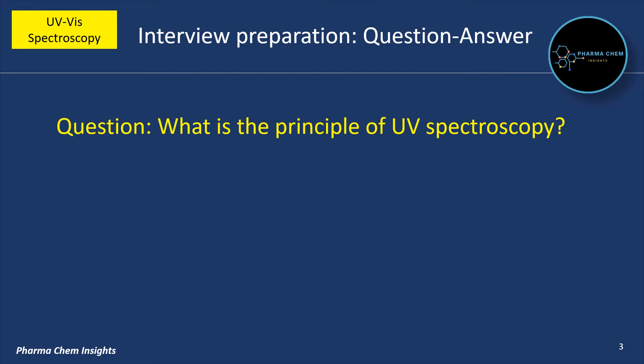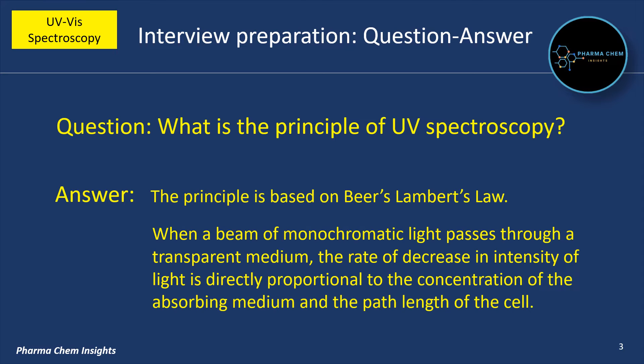What is the principle of UV spectroscopy? The principle is based on Beer-Lambert's law. When a beam of monochromatic light passes through a transparent medium, the rate of decrease in intensity of light is directly proportional to the concentration of the absorbing medium and the path length of the cell.